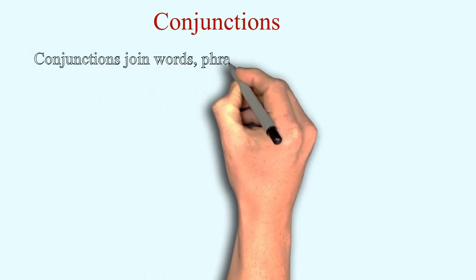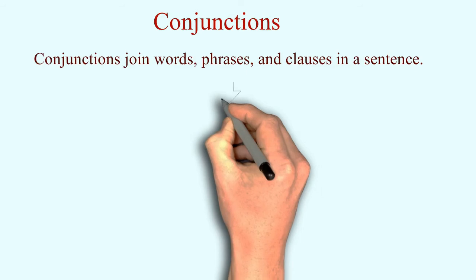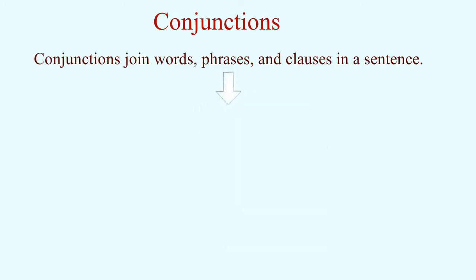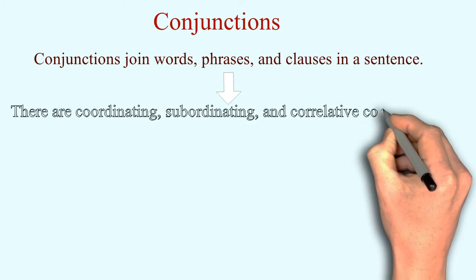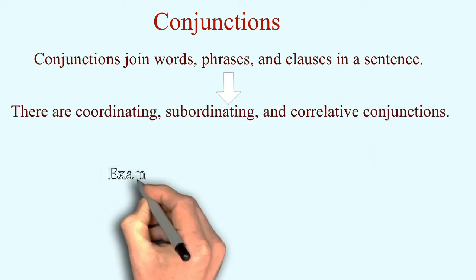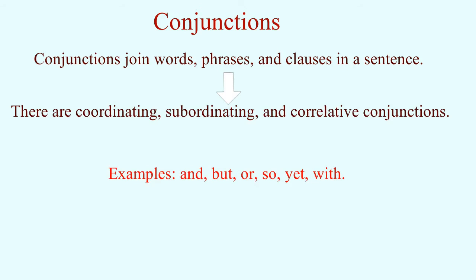Conjunctions basically join words, phrases, and clauses. They are used to join phrases, words, or sentences. They have three subtypes: coordinating, subordinating, and correlative — which we will cover in detail when we go into their specifics. And, but, or, so, yet — these are all conjunctions.